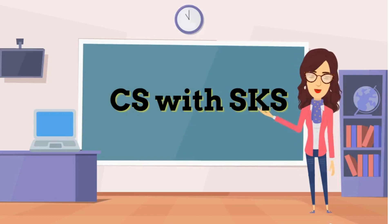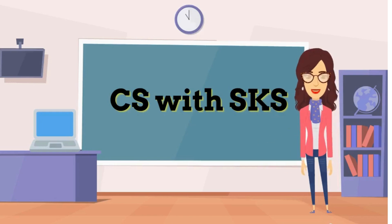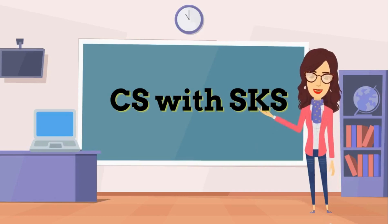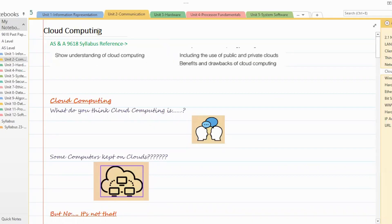Hello everyone, welcome to my channel. Let's learn computer science. Our today's topic is cloud computing. Syllabus reference for AS & E level 9618: show understanding of cloud computing including use of public and private clouds, and benefits and drawbacks of cloud computing.